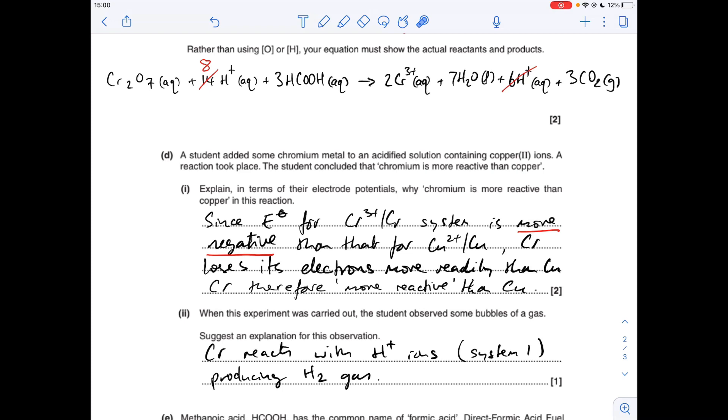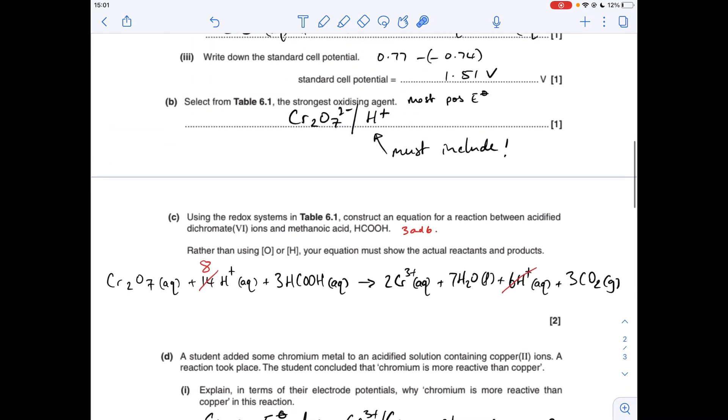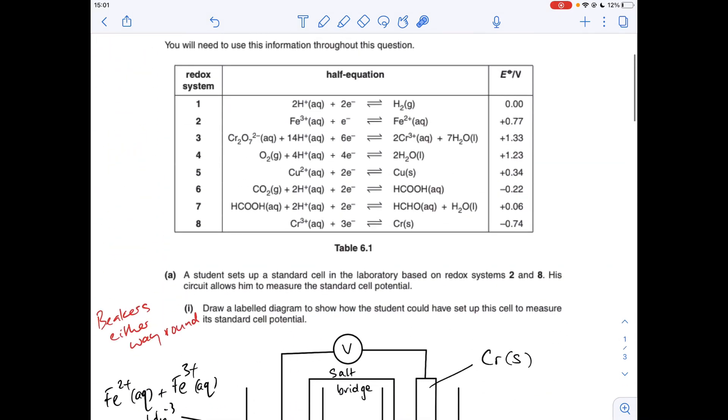Next part, explain why the student observed some bubbles of gas. Remember the copper 2 plus has been acidified. So there's H plus ions kicking about. There's H plus ions in system 1. So if we look at system 1. So here we've got chromium. Look, it's minus 0.74 volts. So this is more likely to go that way. That's more likely to go that way. So you can see hydrogen will be produced.